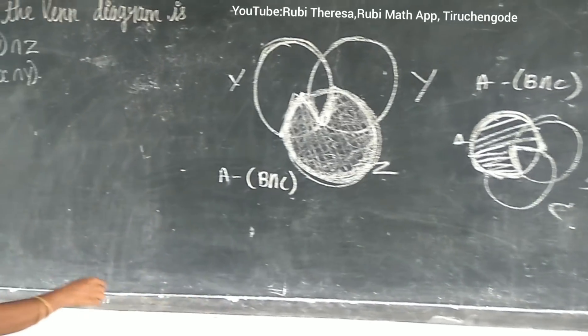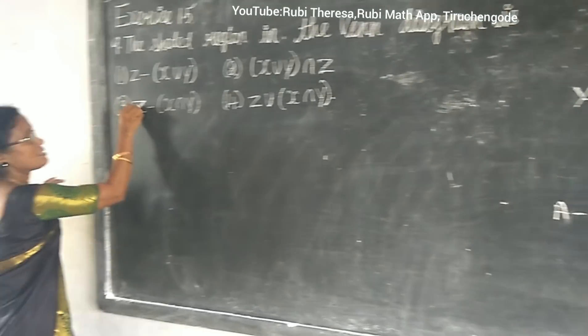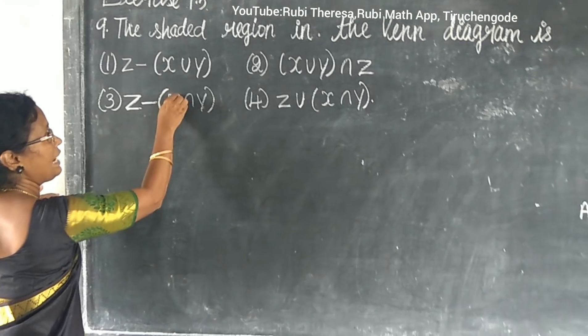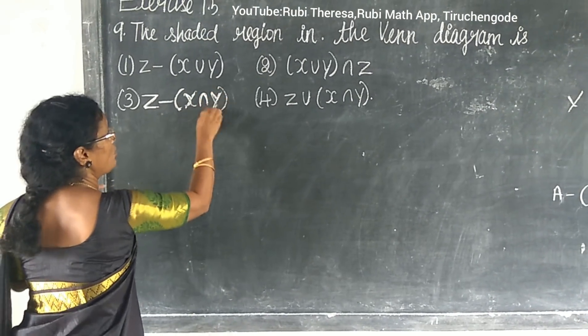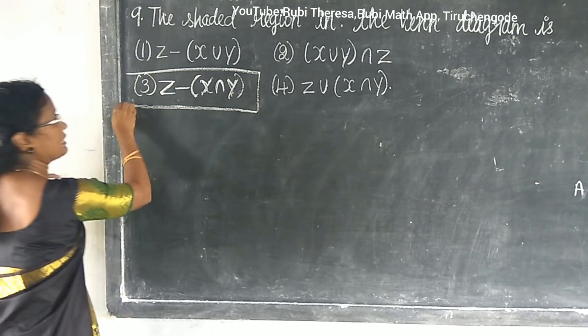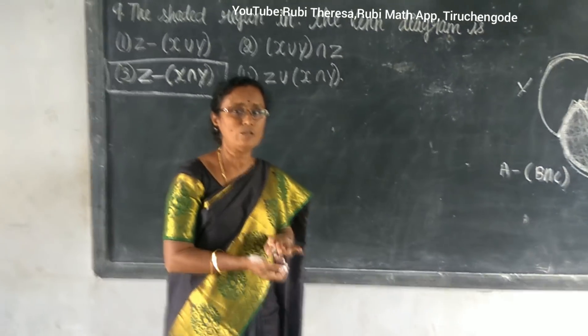So what is the correct answer? Third one. Z difference X intersection Y. This is the correct answer. Do you follow me? Yes ma'am. Thank you.